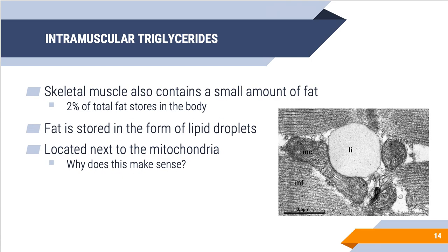We also have intramuscular triglyceride stores within our skeletal muscle. This makes up a relatively small proportion — about two percent of our total fat stores — since adipose tissue is our major storage site. The fat is stored in the form of lipid droplets, and it's important to have these intramuscular triglycerides stored in close proximity to the mitochondria, because lipids are a key fuel source for energy provision through mitochondrial respiration.